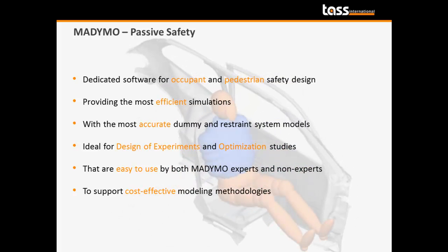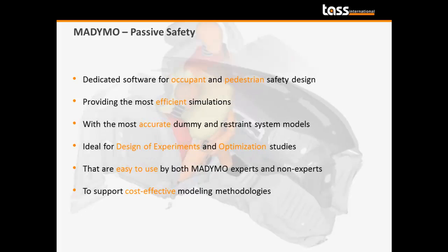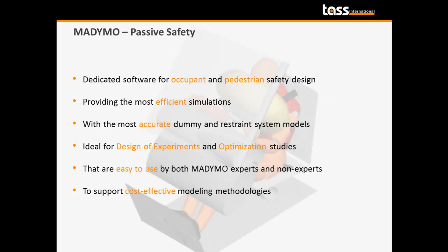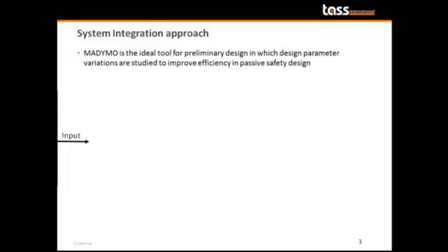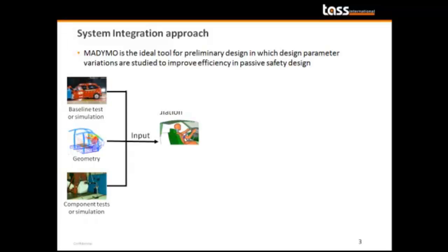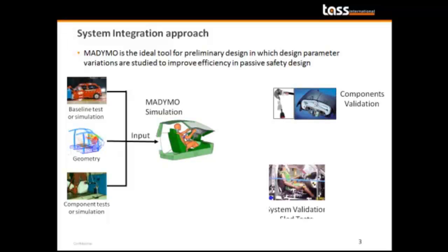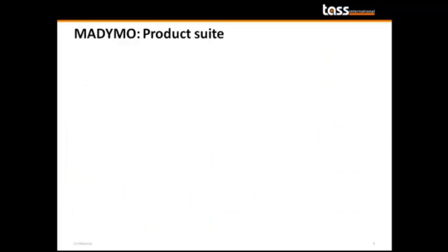Madimo contains the most accurate dummy and restraint system models, and its unrivaled speed is ideally suited for design of experiments and optimization studies. Madimo is easy to use by both expert and non-expert users to support cost-effective design methodologies. It is the ideal tool to optimize your occupant safety system design when the design space contains many variables, allowing iterative optimization where simulations complement component validation and system validation with sled tests to arrive at a final design suitable for a confirmation crash test.